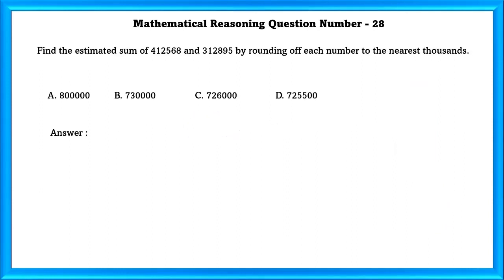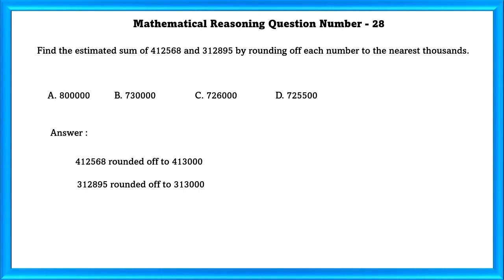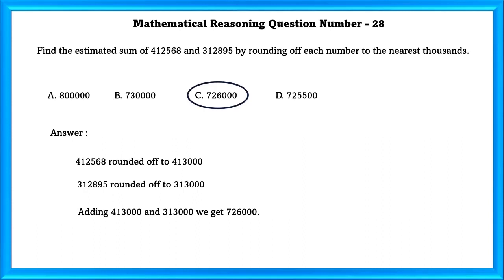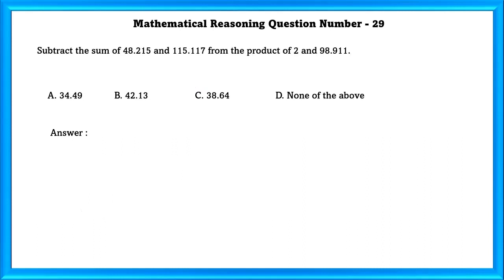Question No. 28: Find the estimated sum of 412,568 and 312,895 by rounding off each number to the nearest thousands. 412,568 rounded to the nearest thousand is 413,000, and 312,895 rounded to the nearest thousand is 313,000. After adding, we get 726,000, which is option C.